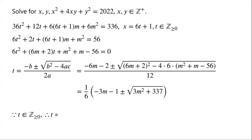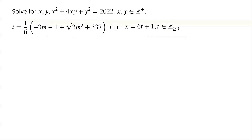As t is a non-negative integer, the negative root is discarded. So t equals (1/6) times (negative 3m minus 1 plus root of (3m squared plus 337)).